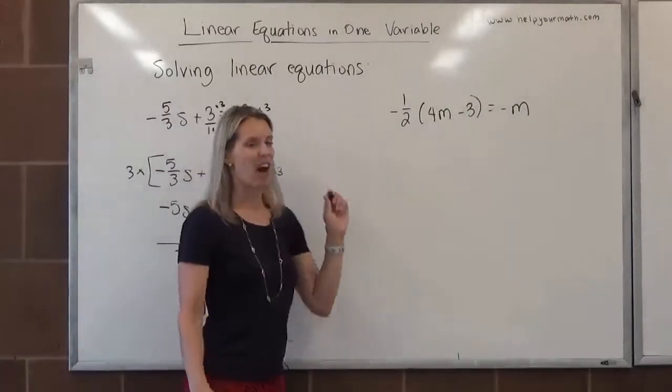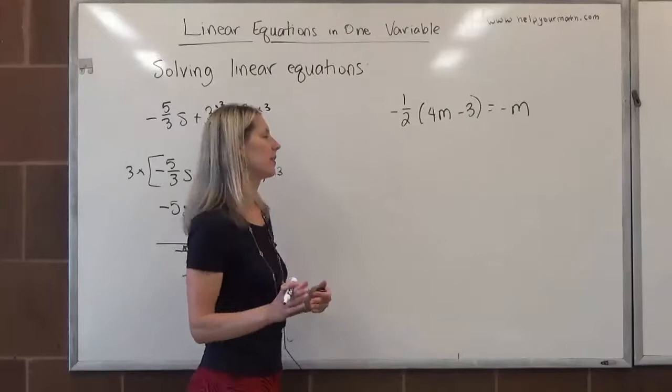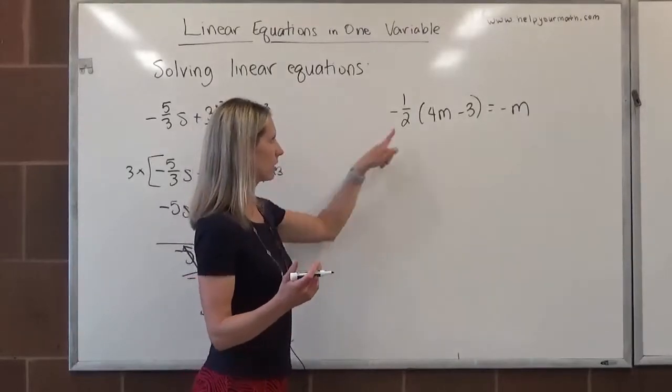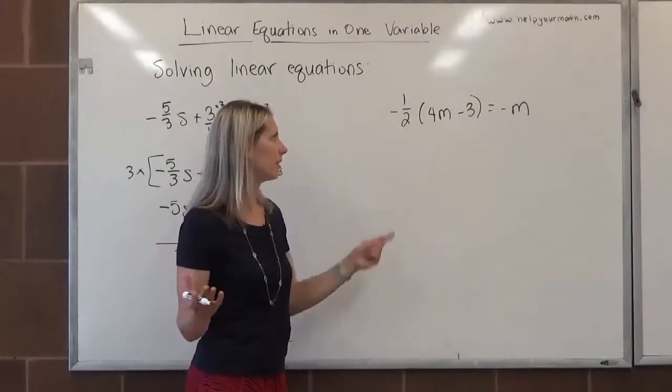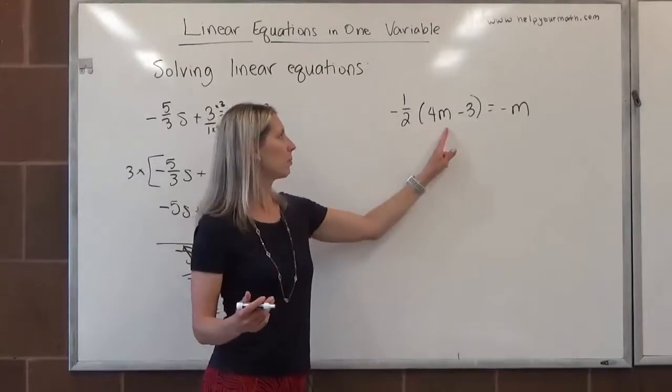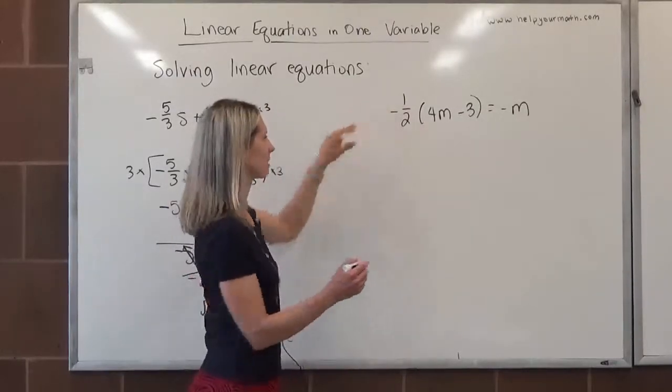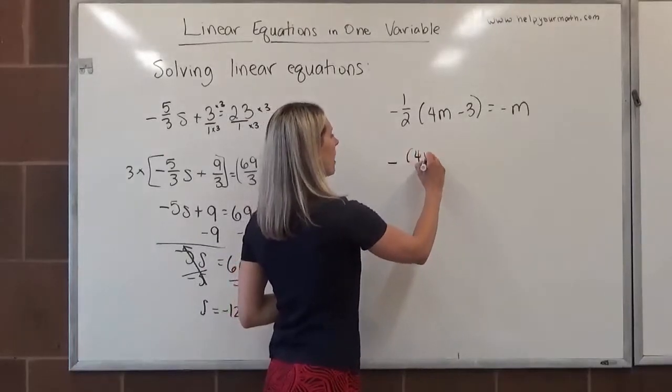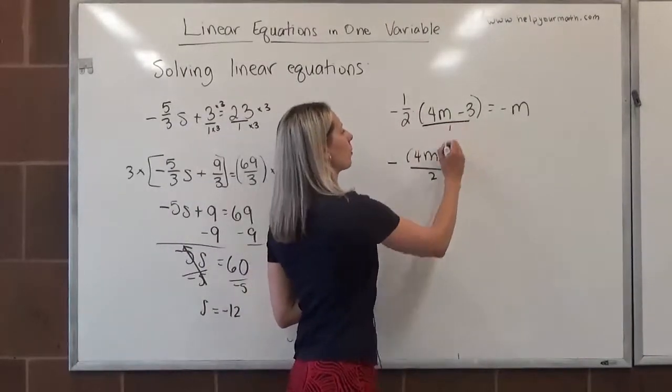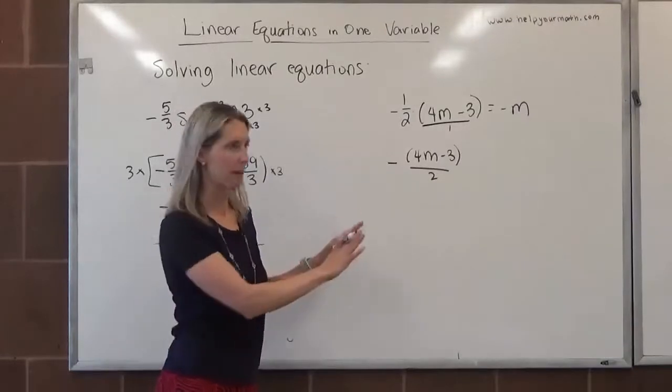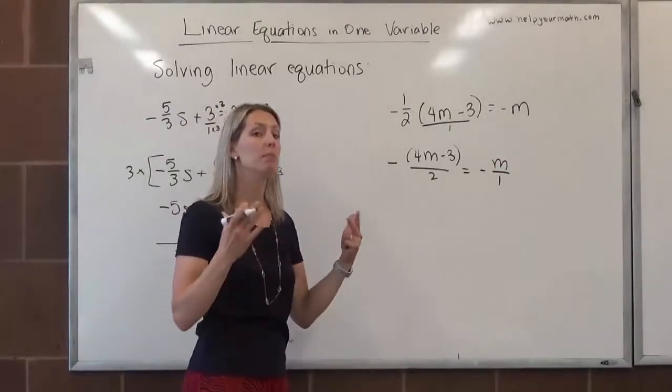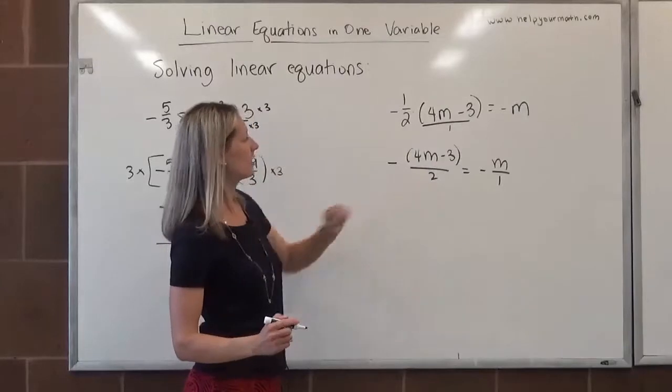Over here, now while here it was kind of optional if you wanted to clear out the fraction, I do suggest clearing out the fraction here. We don't really want to distribute because you will be stuck with a fraction in the problem. Just like this question, there is only one denominator here, so we just want to turn every term to have a denominator of 2. We can take this expression and rewrite it as negative 4m minus 3 over 2. Over here, negative m would have a denominator of 1. This already has a denominator of 2.